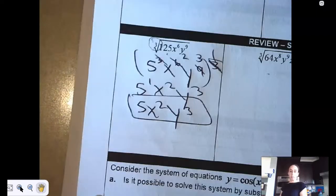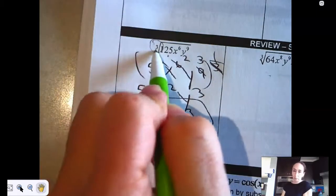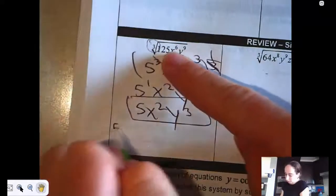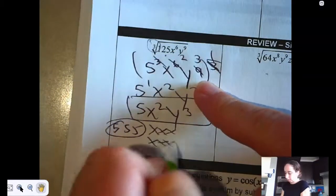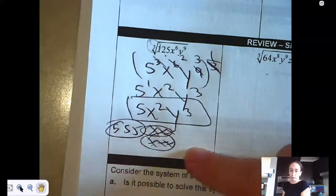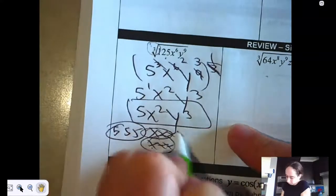I could have also done it a different way. I'm trying to find piles of 3. So that would be 5, 5, 5, that's a pile of 3. For the x's, that's 2 more piles, nothing left over.